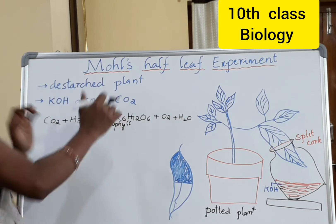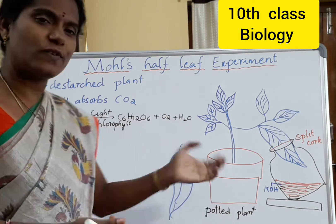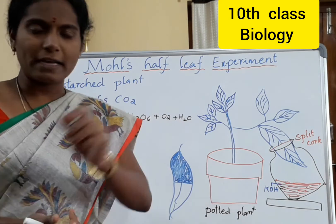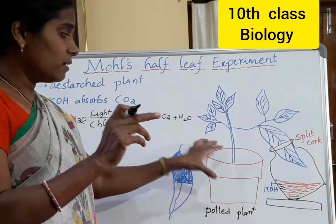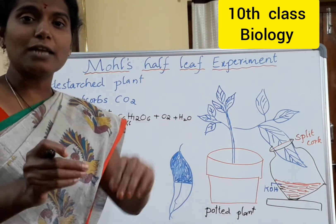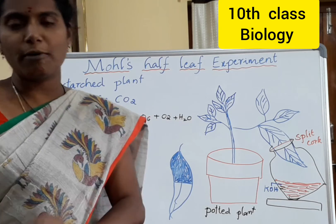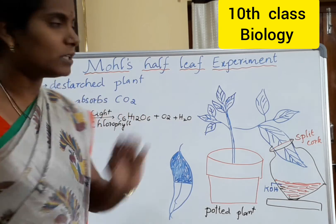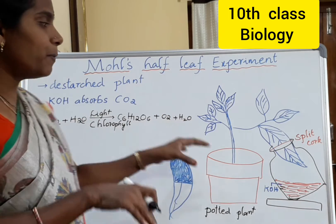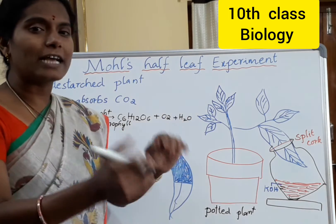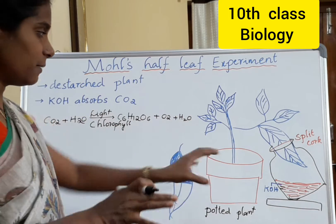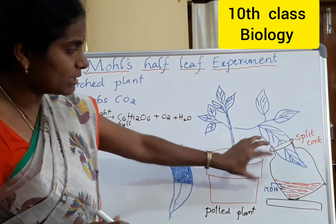De-starch the plant by keeping it in a dark place for two to three days. We should sprinkle water to that plant but not expose it to sunlight. Before exposing it to sunlight, we should set up the apparatus as shown in the figure.